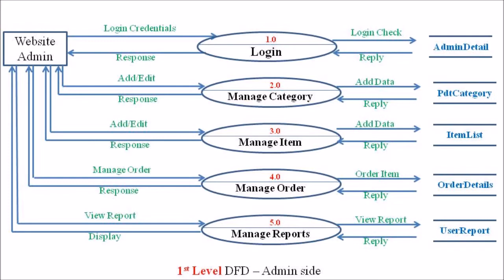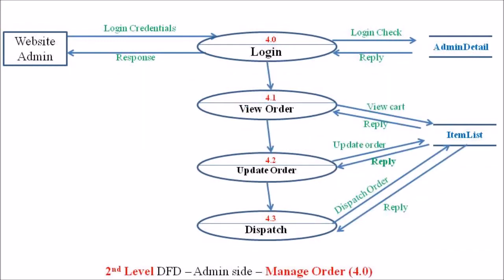When it comes to the manage order process — the 4th process — the website admin has to log in. Login credentials are verified by the suitable programs with the database admin details, which contains the correct constraints and credentials. The admin can then proceed to the view order process, where the admin can view the independent orders given by individual customers. These orders can be verified by viewing the item list database, which is updated or inserted by the customer, and the admin can check the cart or order list of each and every customer.